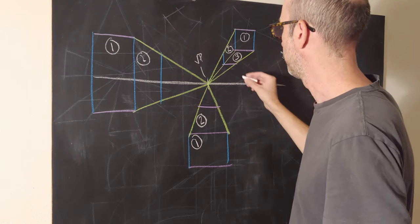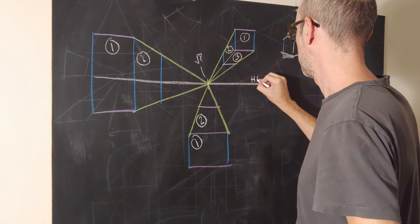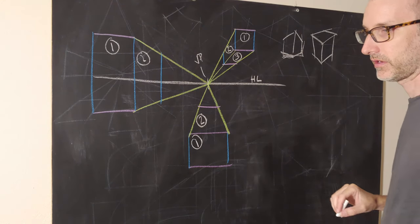So for vanishing point, we call it VP, the horizon line, the HL. So you see that label all the time.